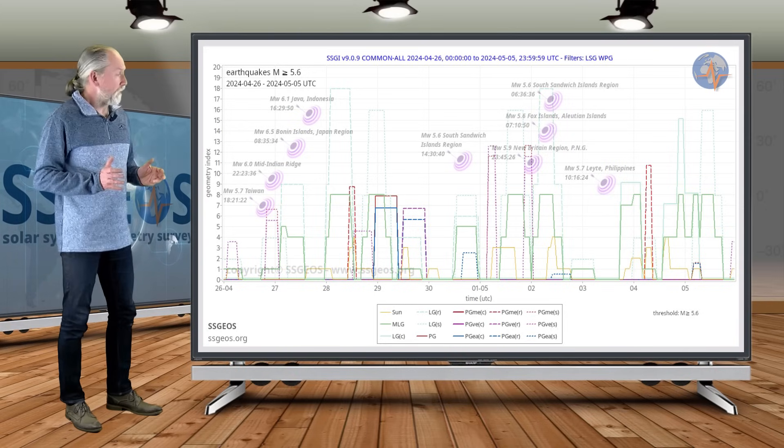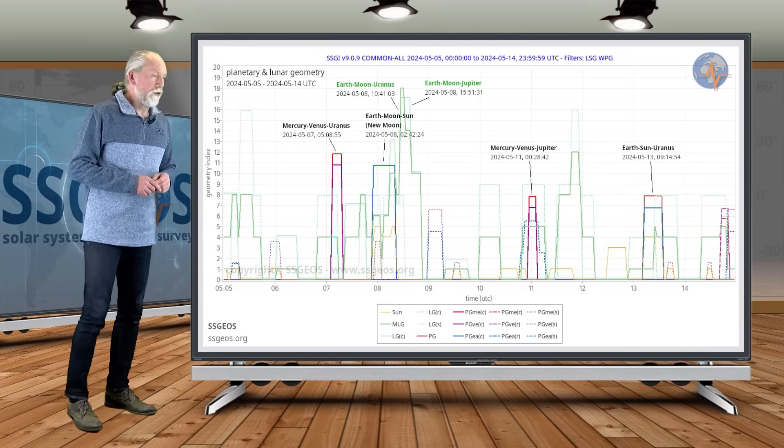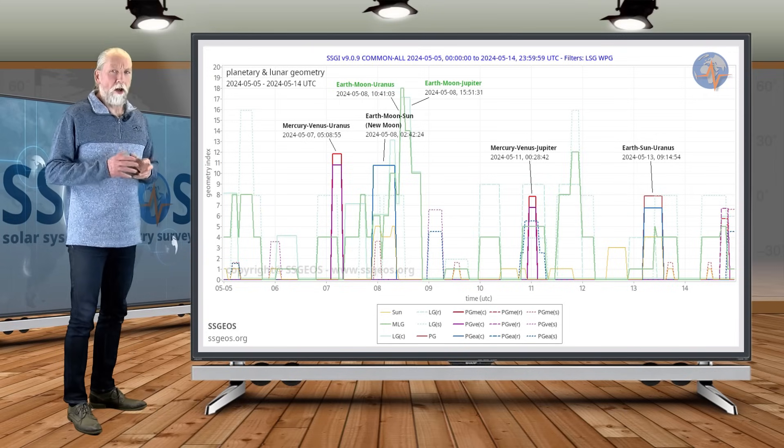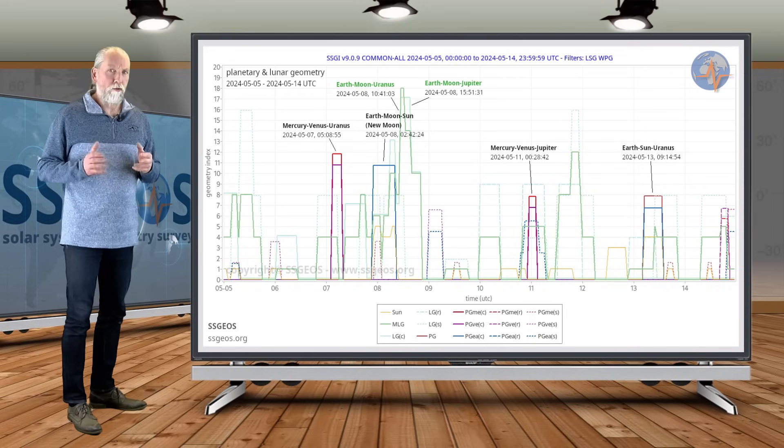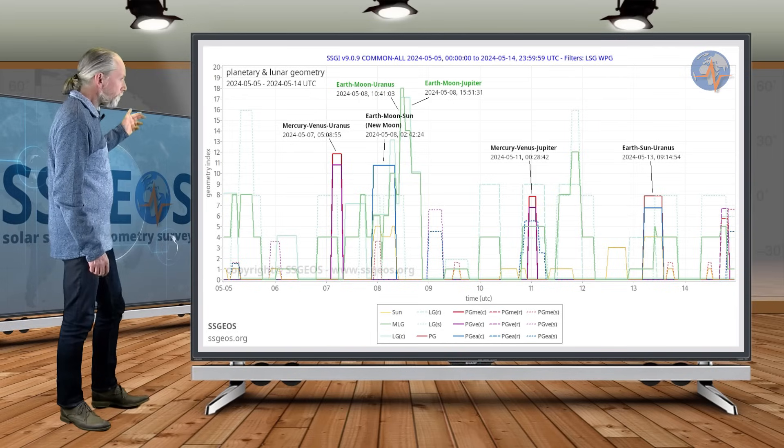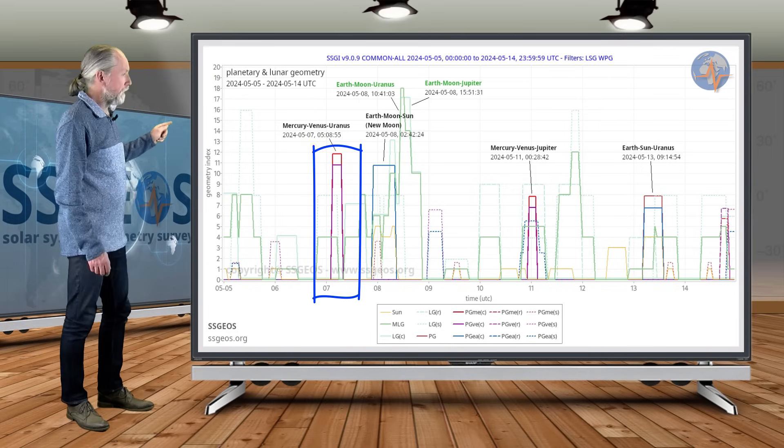No large seismic activity, fortunately. If we look at the next timeframe up until May 14th, we don't have a lot of critical geometry. We have a couple of conjunctions, but they do involve Mercury and Venus combined. So let's have a look. On the seventh, we see a red-purple peak—that is Mercury and Venus in combination.